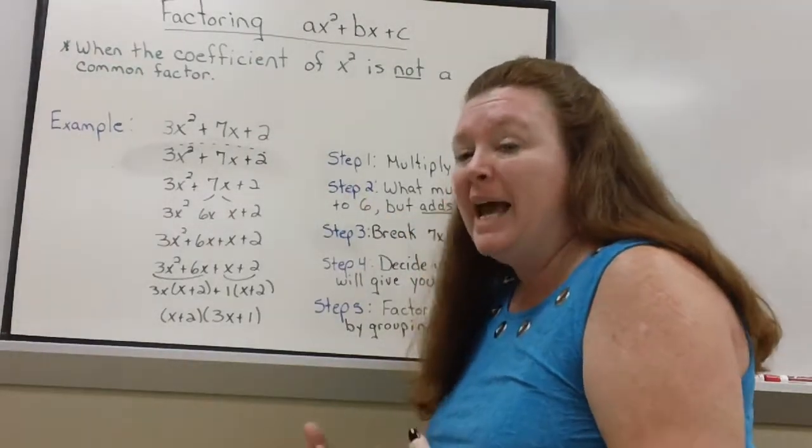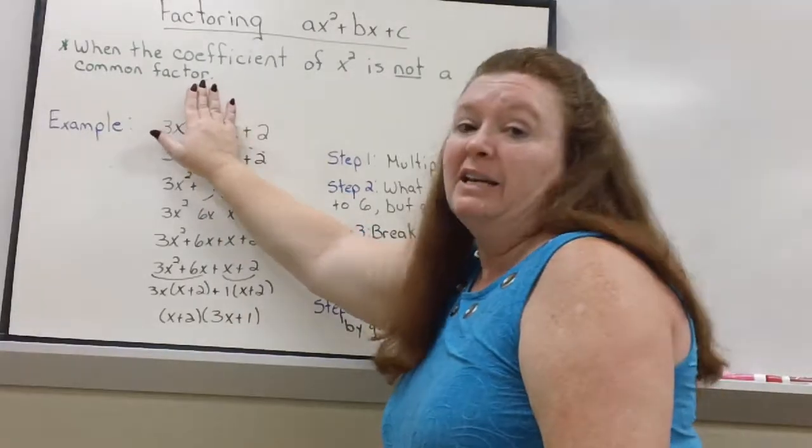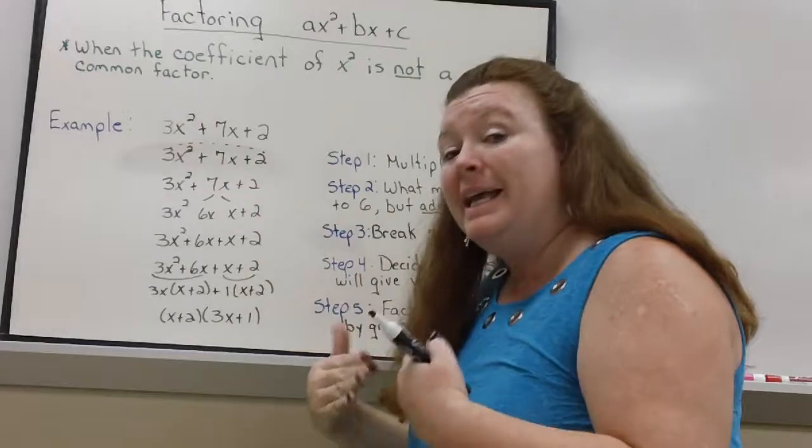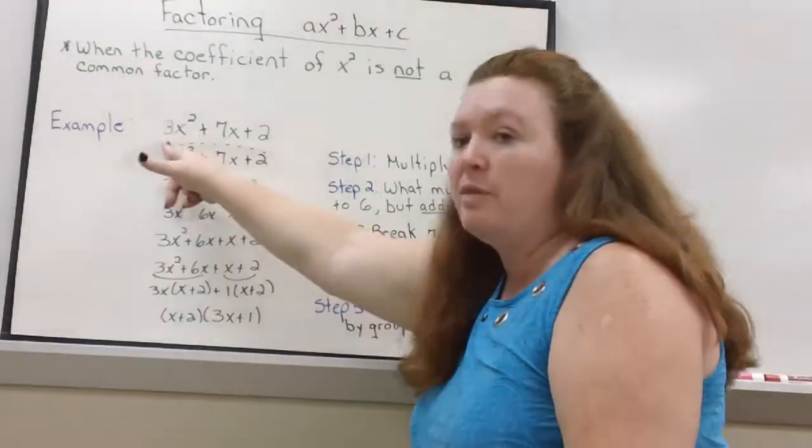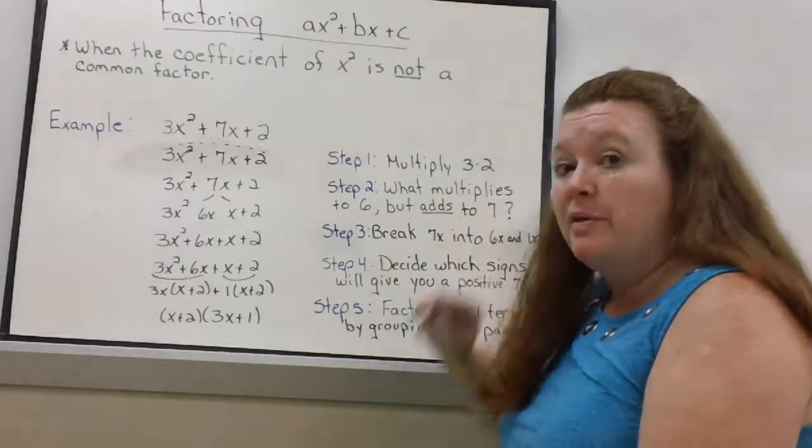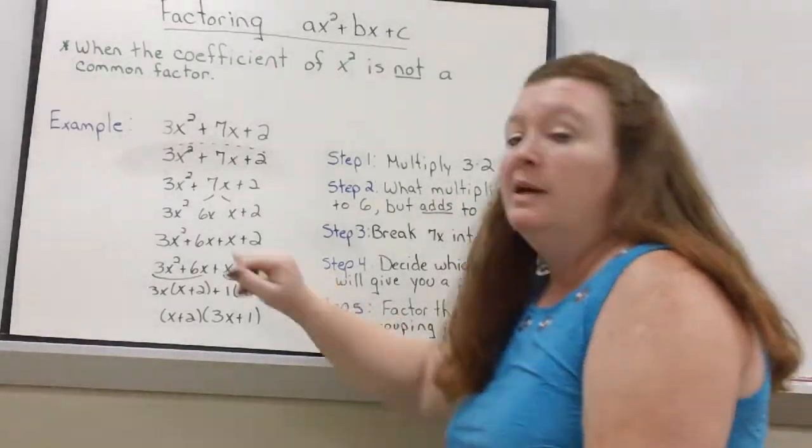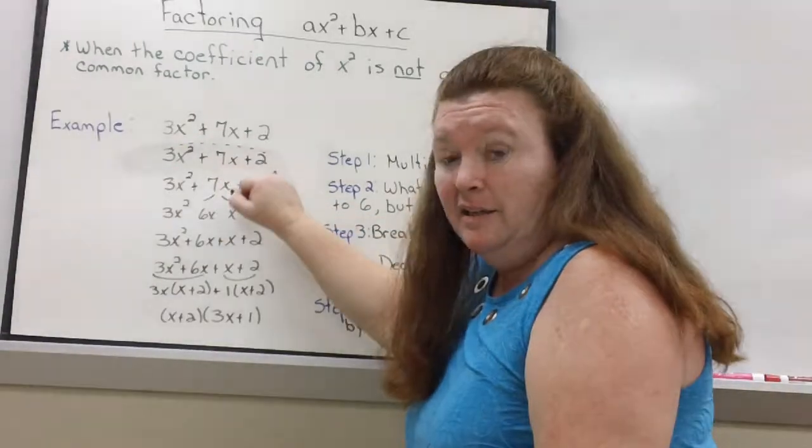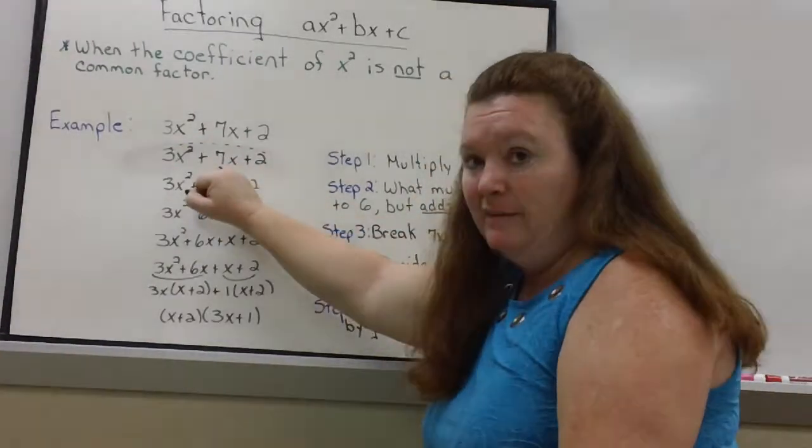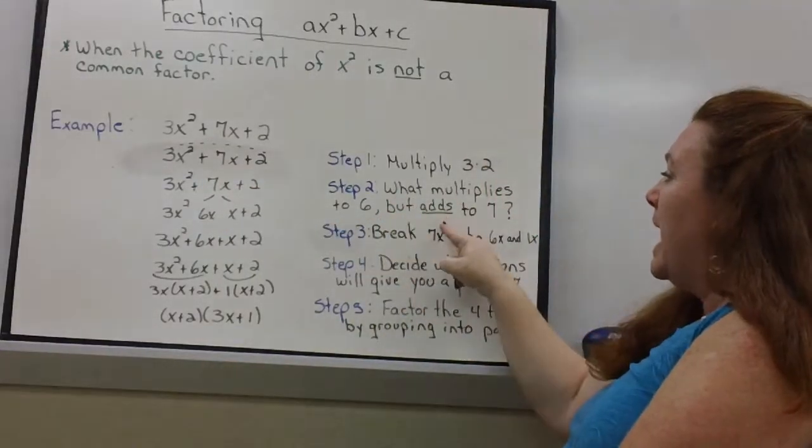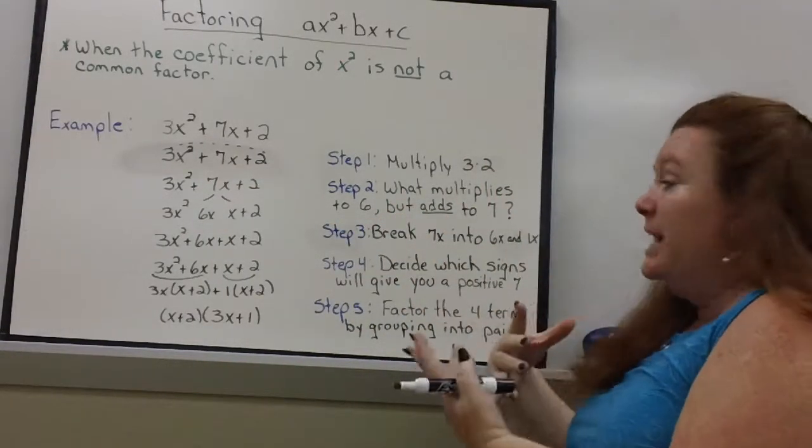Well normally I might ask what multiplies to give me 2 and adds up to give me 7. But I can't do that because there's a 3 there. So the first thing I'm going to do is multiply the 3 and the 2. I'm going to say what multiplies to give me 6 and adds up to 7. So what multiplies to 6 but adds up to 7. That's my next step.